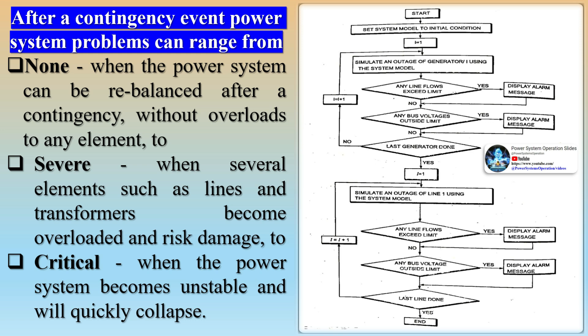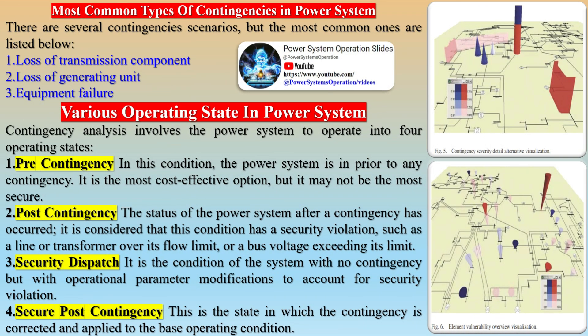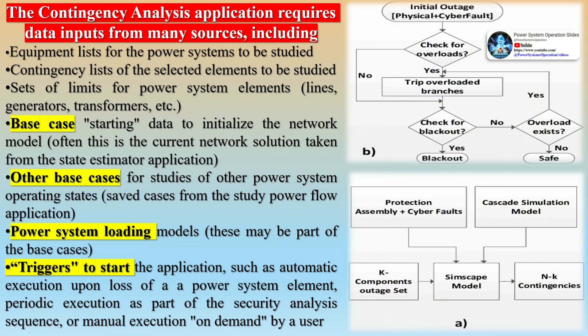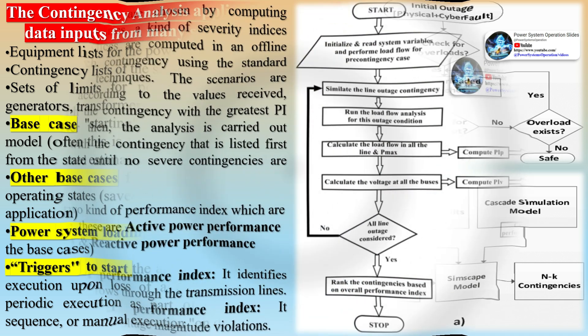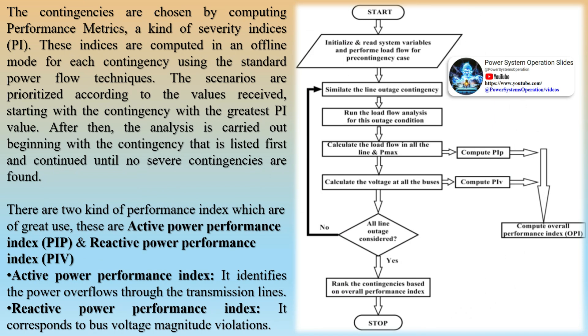An important part of security analysis revolves around the power system's ability to withstand the effect of contingencies. The system security assessment process is carried out by calculating system operating limits in the pre-contingency and post-contingency operating states at an operation control center or at the Energy Management System (EMS) of the utility company. Contingency analysis is time-consuming as it involves complete AC load flow calculations following every possible outage event. To mitigate this, an automatic contingency screening approach is adopted, which identifies and ranks only those outages that cause limit violations on power flow or voltages. The contingencies are screened according to a severity index or performance index, where a higher value denotes a higher degree of severity.